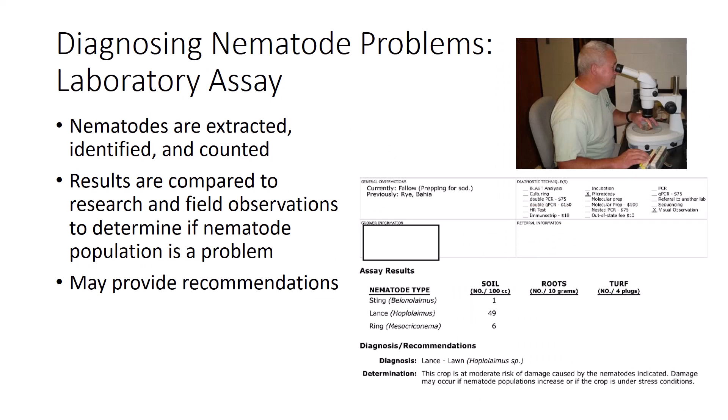In the lab, nematodes are extracted from the soil and plant tissues, identified, and counted. Those results can be compared with research and field observations to determine whether or not the crop is likely to be injured by the population under those conditions. In some cases, specific steps to reduce the numbers and/or effects of a particular nematode species are recommended only if the population density exceeds some predetermined level felt to represent the threshold for economic loss of that crop. Such thresholds are determined through long-term experience of nematologists with that pest and crop in growers' operations and in controlled experiments.